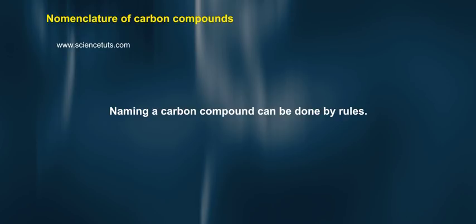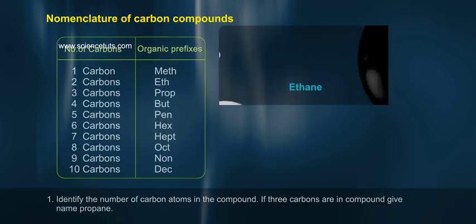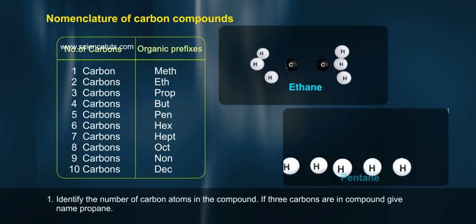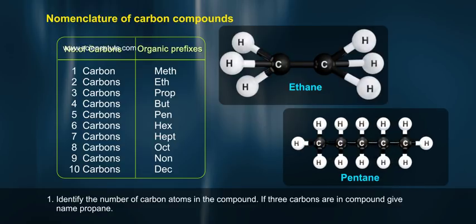Naming a carbon compound can be done by rules. Rule 1: Identify the number of carbon atoms in the compound. If three carbons are in the compound, give the name propane.